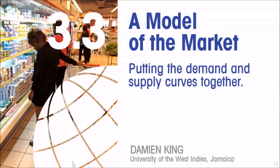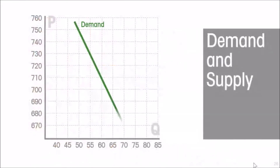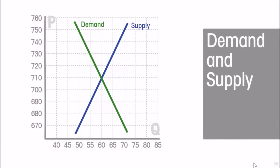We want to take the demand curve and the supply curve and put them together to create a model of the market. We know the demand curve is downward sloping and the supply curve is normally upward sloping.